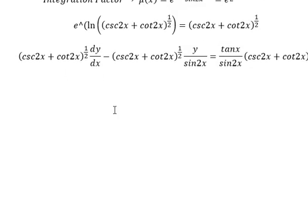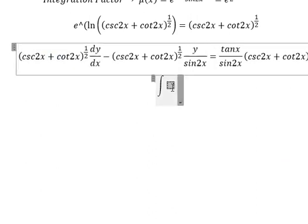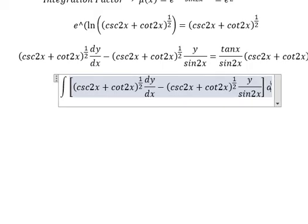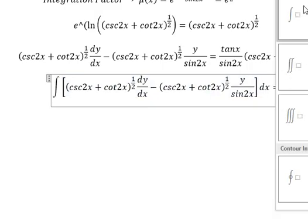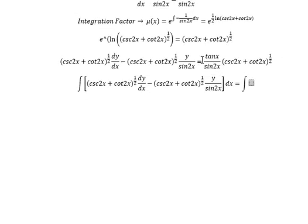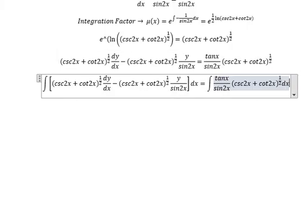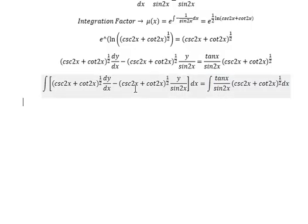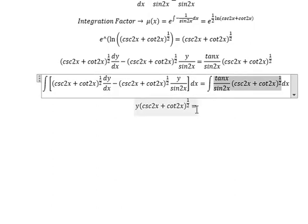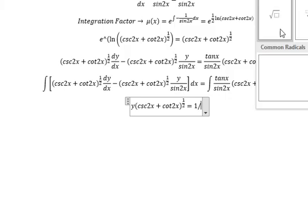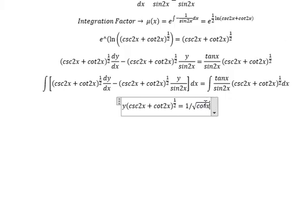Next we put the integration factor on both sides. The integration on the left will be y multiply with this one. The integration on the right will be one over the square root of cotangent x plus C.